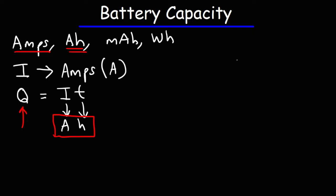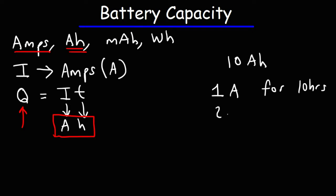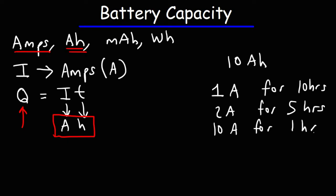If a battery has a charge capacity of 10 amp hours, it means the battery can deliver 1 amp for 10 hours, or 2 amps for 5 hours (2 times 5 is 10), or 10 amps for 1 hour. Now some batteries can't deliver high current — there's a limitation due to the internal resistance inside a battery. But ideally speaking, this is what it would equate to.